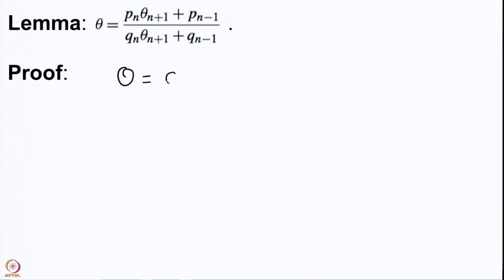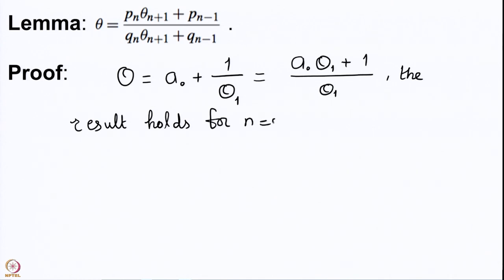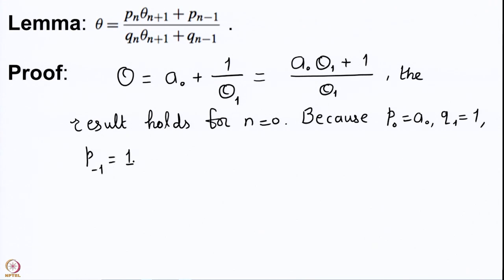We prove this by induction. Here θ = a₀ + 1/θ₁, which is nothing but (a₀θ₁ + 1)/θ₁. The result holds for n = 0 because P₀ = a₀, Q₀ = 1, and by convention P₋₁ = 1 and Q₋₁ = 0. If you are not happy with this, we can go one more step and verify the result holds there also.